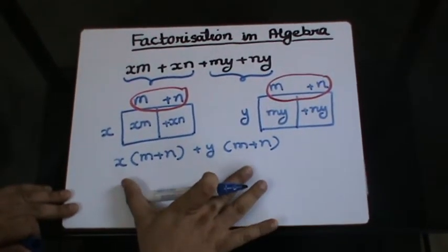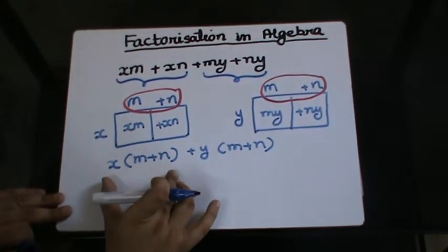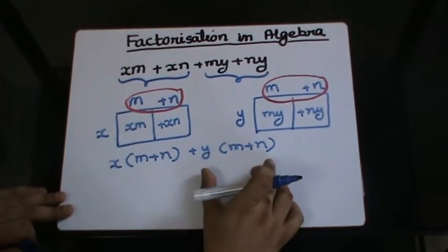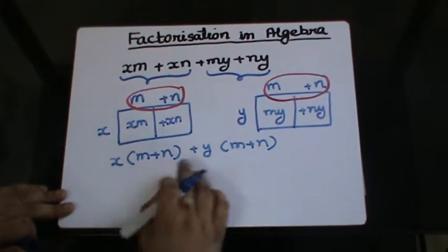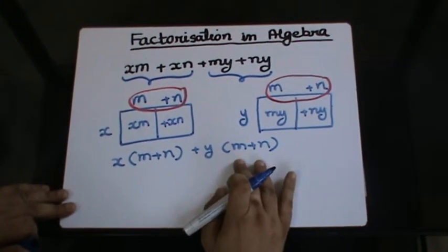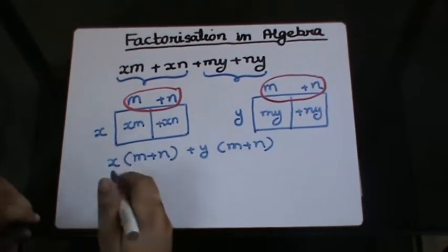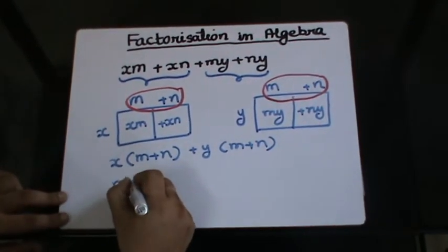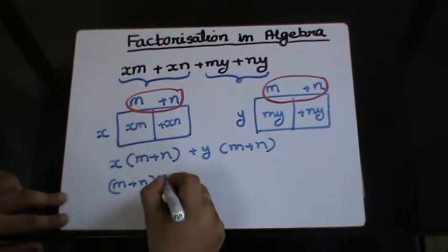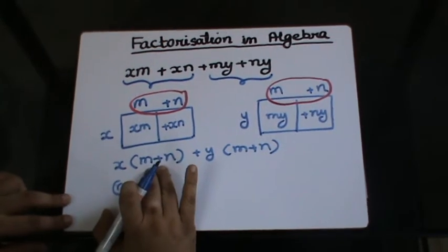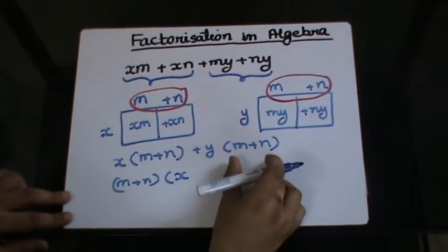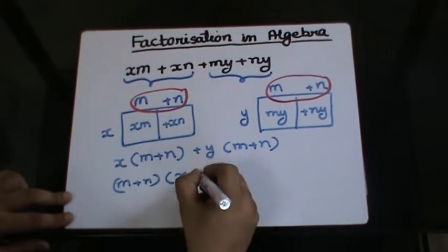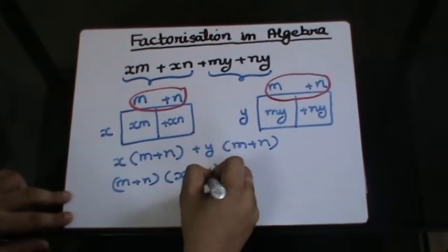Now, there are two terms with us. First term is x into m plus n and second term is y into m plus n. And both these terms contain m plus n as the factor. So I can have m plus n common. If I take away m plus n from this term, I will have x left over here. And if I take away m plus n from this term, I will have y left over here. This shows the final factorization for this type of expression.